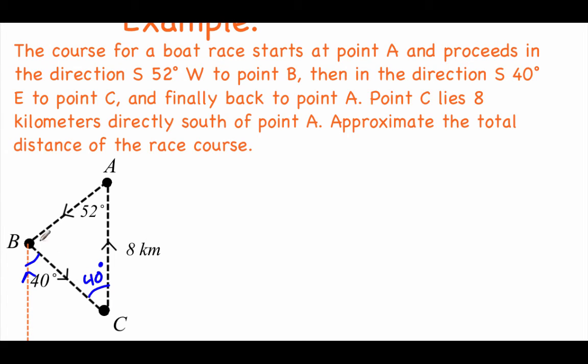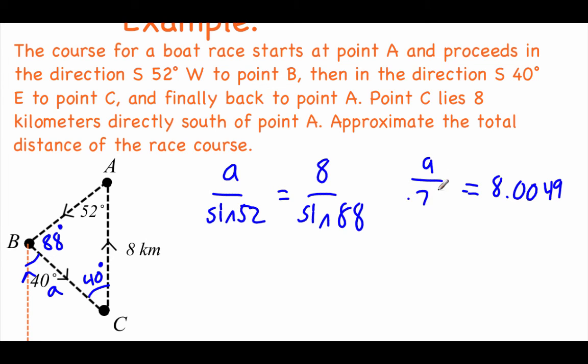Using what we know about the angles inside of a triangle, this other angle happening at point B has to be an 88 degree angle. And now we have enough information to use our law of sines. So let's go ahead and find side A right away. So we're going to go A over the sine of 52 equals, looks like we have both things for B, so we're going to go 8 over the sine of our 88 degree angle. Typing the right hand side into our calculator, if we go to four decimals, we get about 8.0049. Left hand side, we've got A over 0.7880. And if we multiply that decimal over to the other side, we get the length of A to be about 6.31 kilometers.